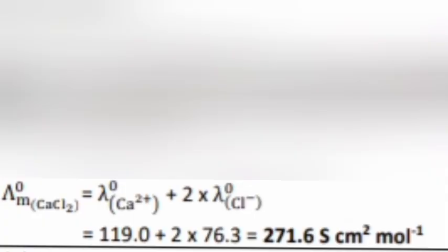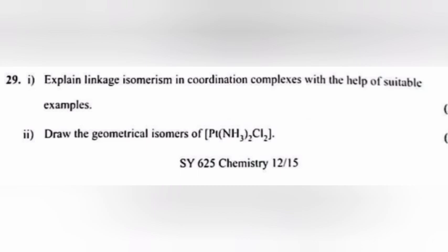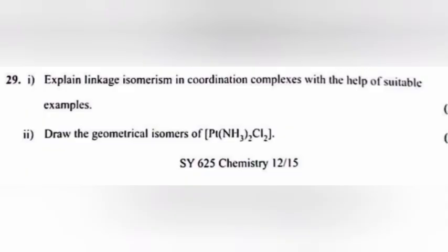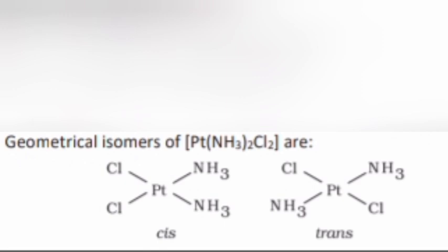Question 29.1: Explain linkage isomerism in coordination complexes with the help of suitable examples. Answer: Linkage isomerism arises in a complex due to the presence of an ambidentate ligand, which can bind to the central atom through more than one donor atom. 29.2: Draw the geometrical isomers of [Pt(NH₃)₂Cl₂]. Answer: The geometrical isomers of [Pt(NH₃)₂Cl₂] are shown.